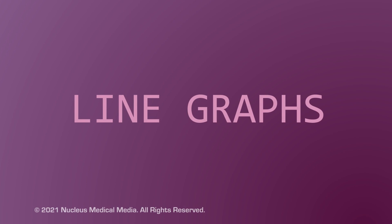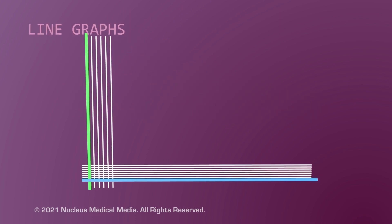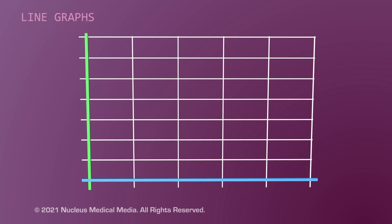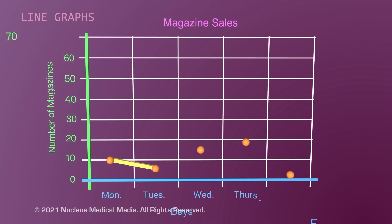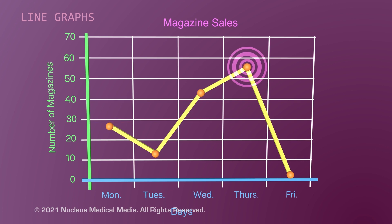Now let's talk about line graphs. Line graphs are used to track certain changes as measured on the y-axis, usually over a period of time as measured on the x-axis. This line graph shows the number of magazines sold over the course of a week. Reading this graph, you can see the most magazines were sold on Thursday and the least number of magazines were sold on Friday.